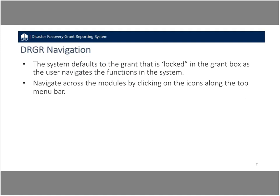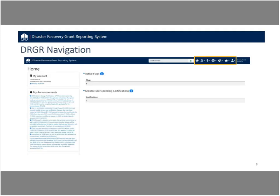Those of you who haven't used DRGR in a while might remember that in the old system, you'd have to choose your grant every time you tried to do a function. But this lock grant function allows you to navigate much more efficiently across the modules. At the top of the screen, when we log in, we'll see the DRGR screen, and the top navigation bar includes the module icons as well as this select grant box.